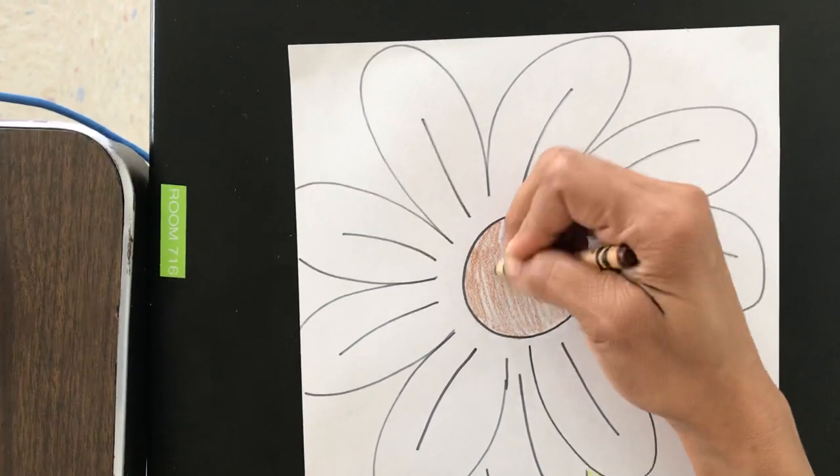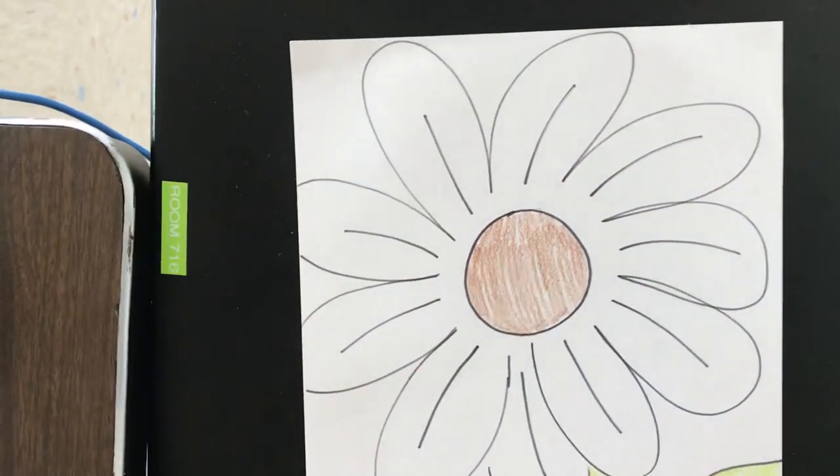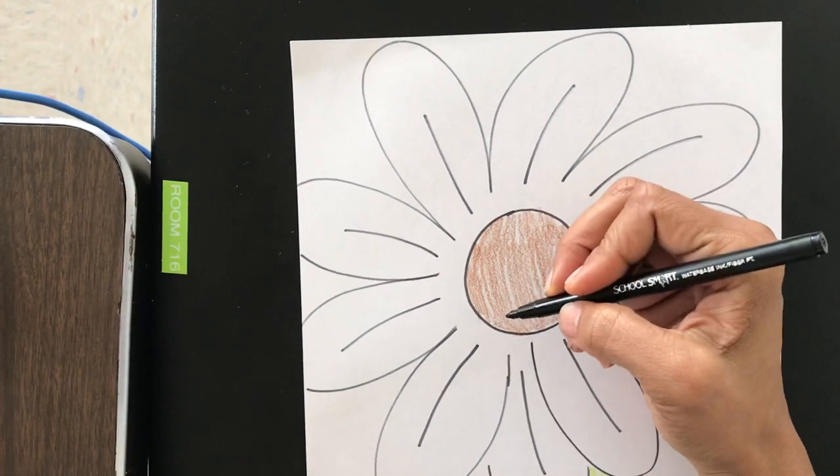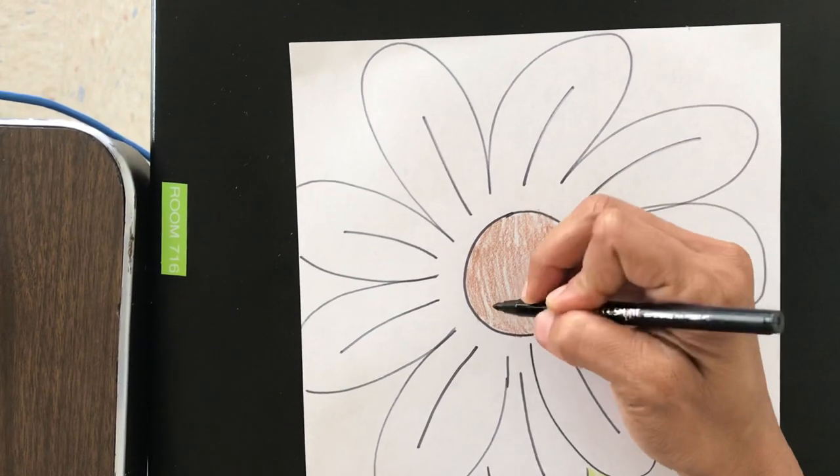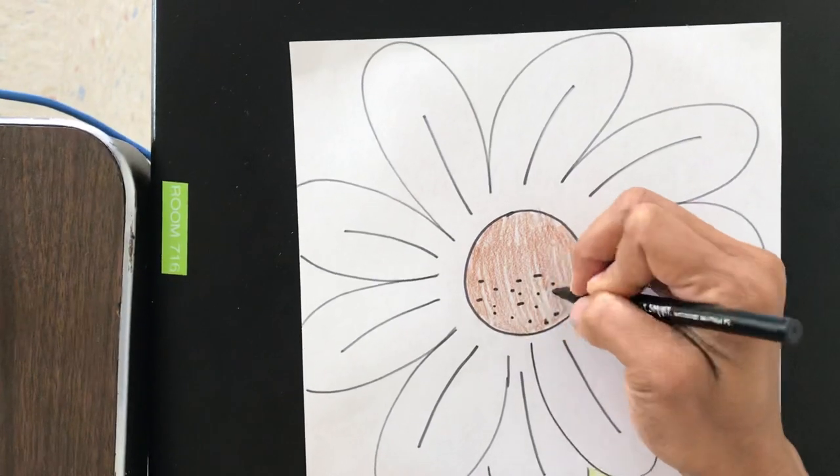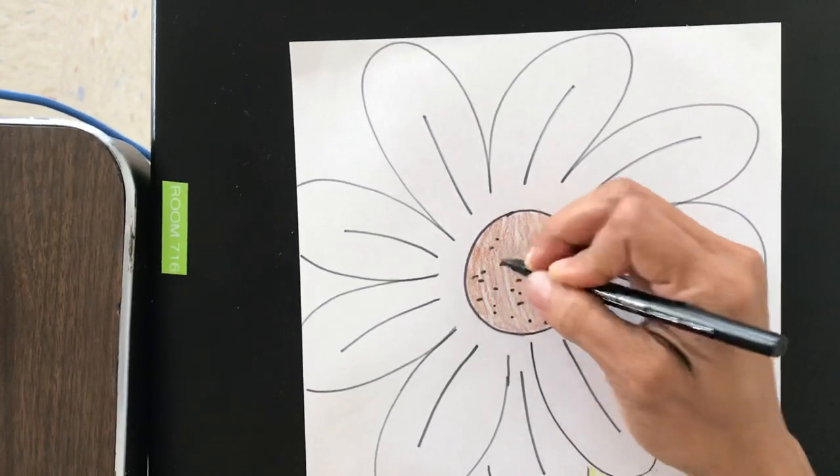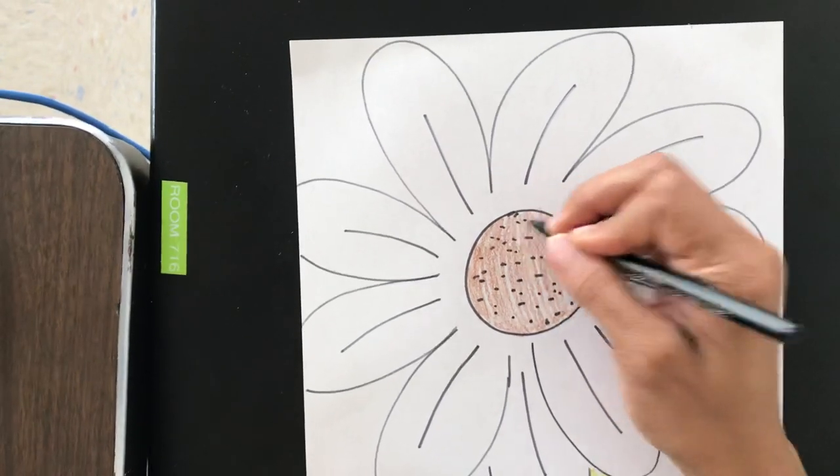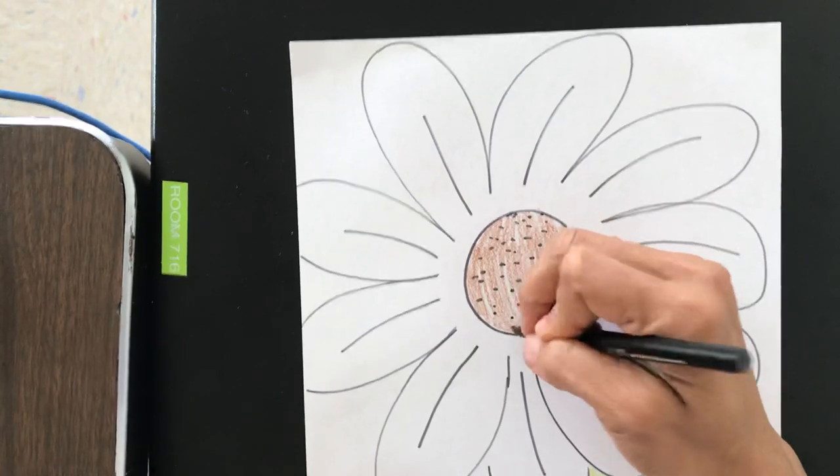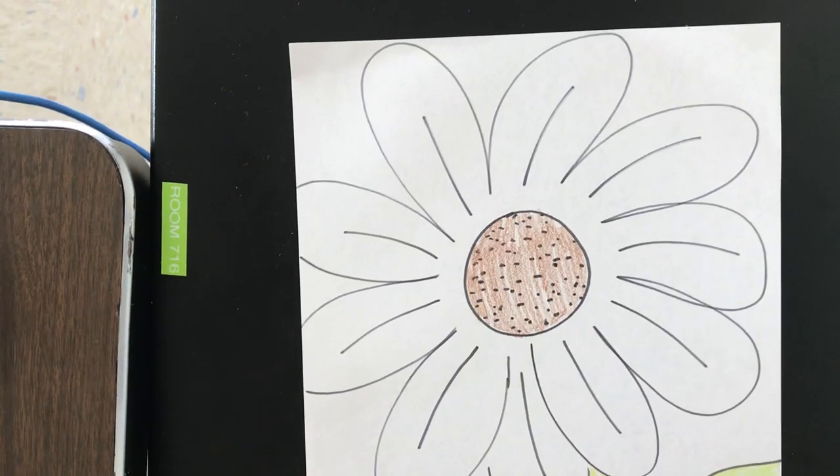Oh, and you know what? I forgot something. The texture of the center part of my flower. I'm just going to take a black marker or you could use a black crayon and put little dots in there. And that represents the texture of the center part of our sunflower. Anybody see that? Cool. You got it, guys.